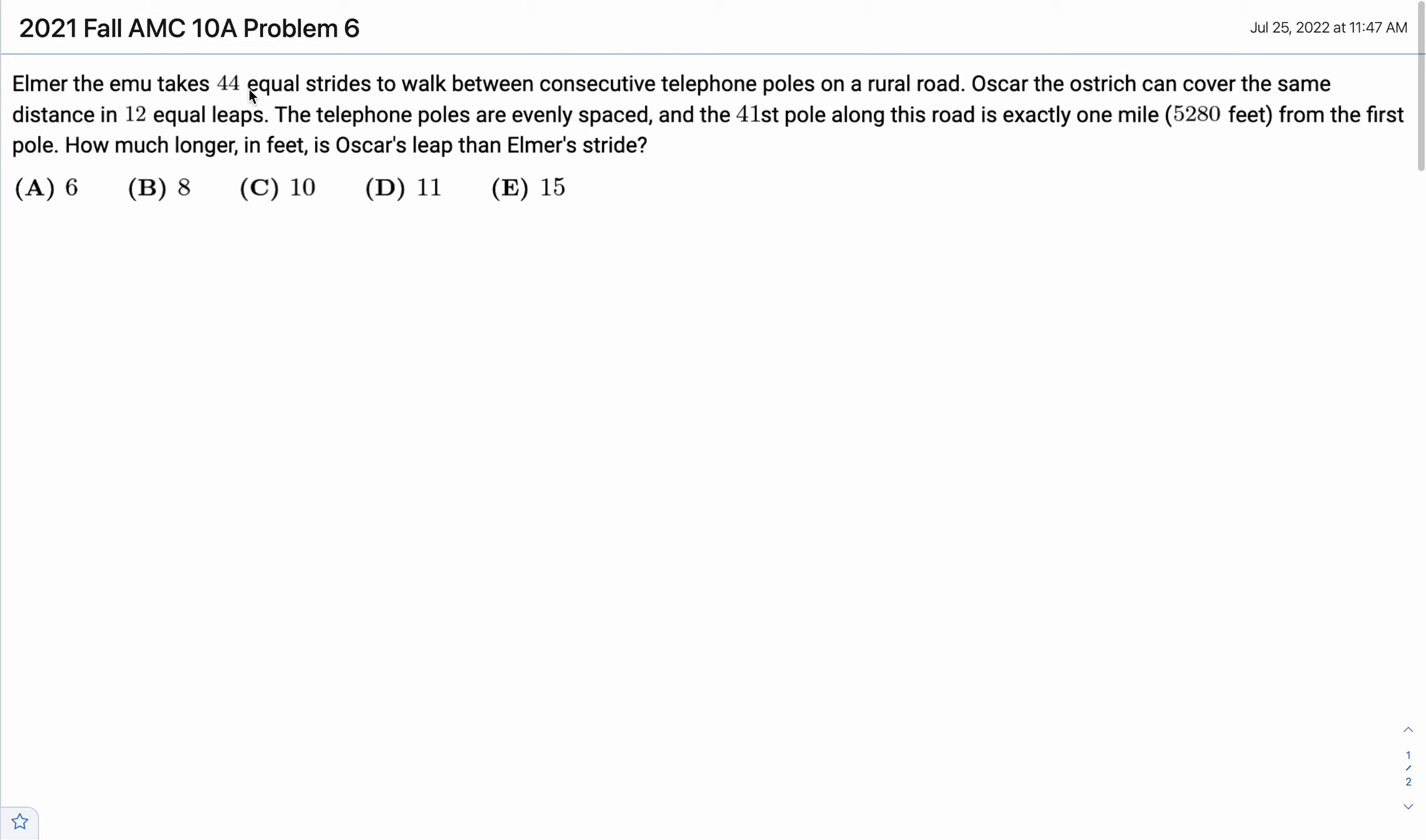Elmer the Emu takes 44 equal strides to walk between consecutive telephone poles on a rural road. Oscar the Ostrich can cover the same distance in 12 equal leaps. The telephone poles are equally spaced, and the 41st pole along this road is exactly one mile from the first pole. How much longer in feet is Oscar's leap than Elmer's stride?